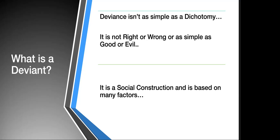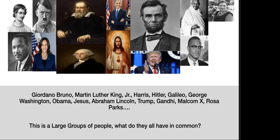So what is a deviant? Well, a deviant isn't someone good or bad. It's not someone evil or maleficent, angelic or happy. It's not right or wrong — it's a social construction used to give our understanding. Allow me to get to the next slide to illustrate this further.